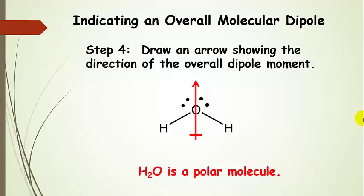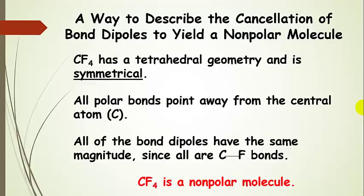For water, we show the overall molecular dipole with an arrow pointing upward — the overall molecular dipole pointing up as drawn. For carbon tetrafluoride, its tetrahedral geometry is symmetrical, all polar bonds point away from the central carbon, they're all equal and the same bond, so all bond dipoles cancel out. Overall, carbon tetrafluoride is a nonpolar molecule — it still has polar bonds, but all those bond dipoles cancel out to result in a nonpolar molecule.